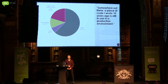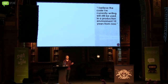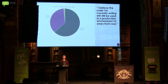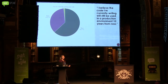The second thing I wanted to know was: 'I believe the code I'm currently writing will still be used in the production environment 10 years from now.' Raise your hand if you believe that. Here are the results: 62.7% believe their code will still be alive in 10 years; 35.9% don't know; and 1.4% are not writing any code. This is interesting statistics, but it doesn't really tell us anything. What I want to do is break this down further and see how these two questions relate to each other.